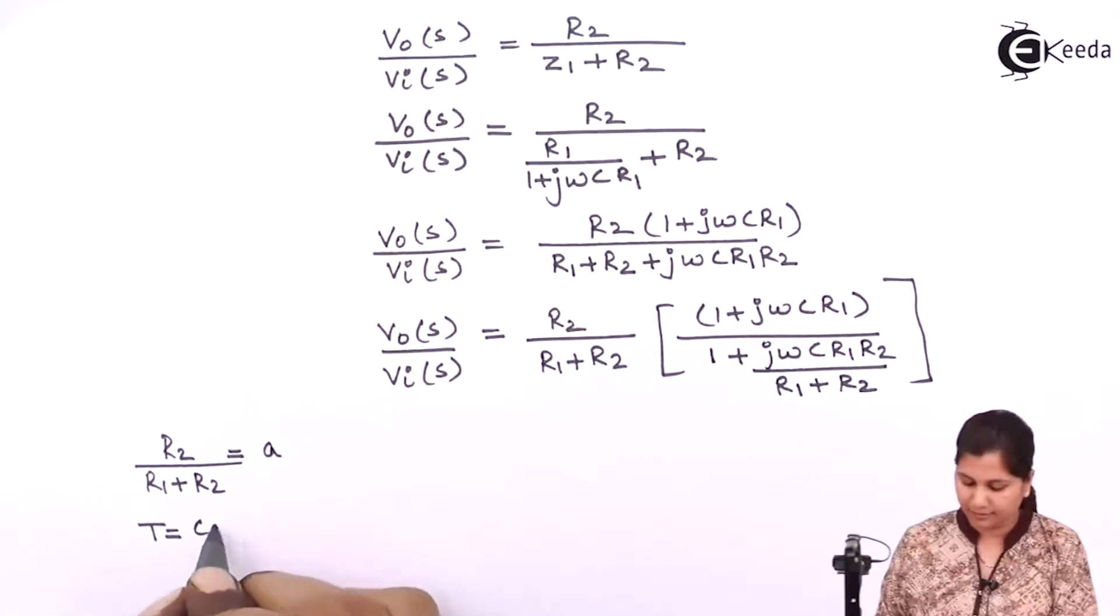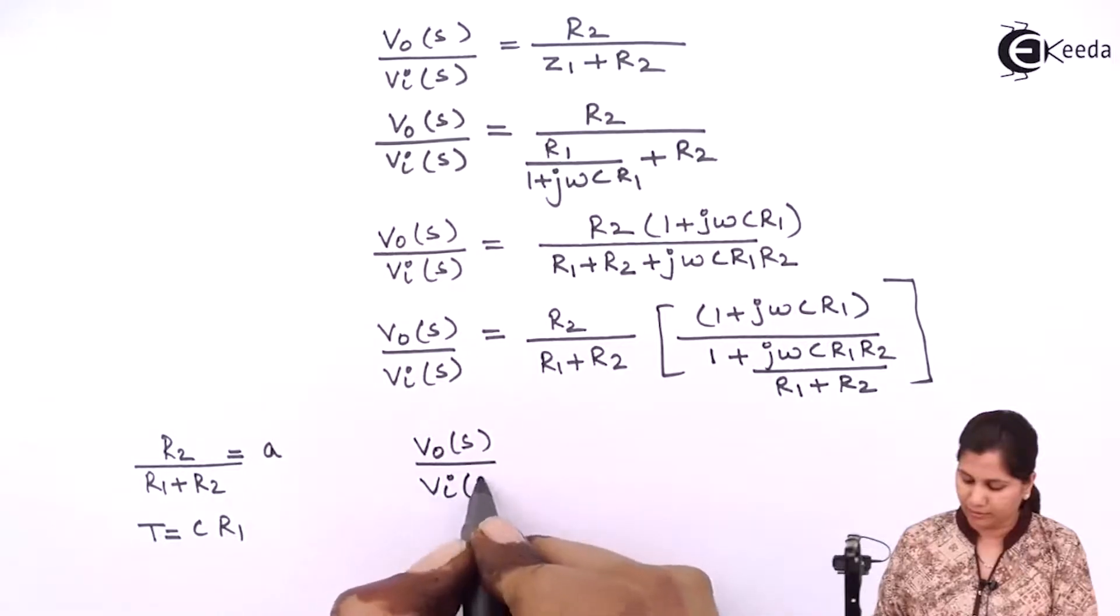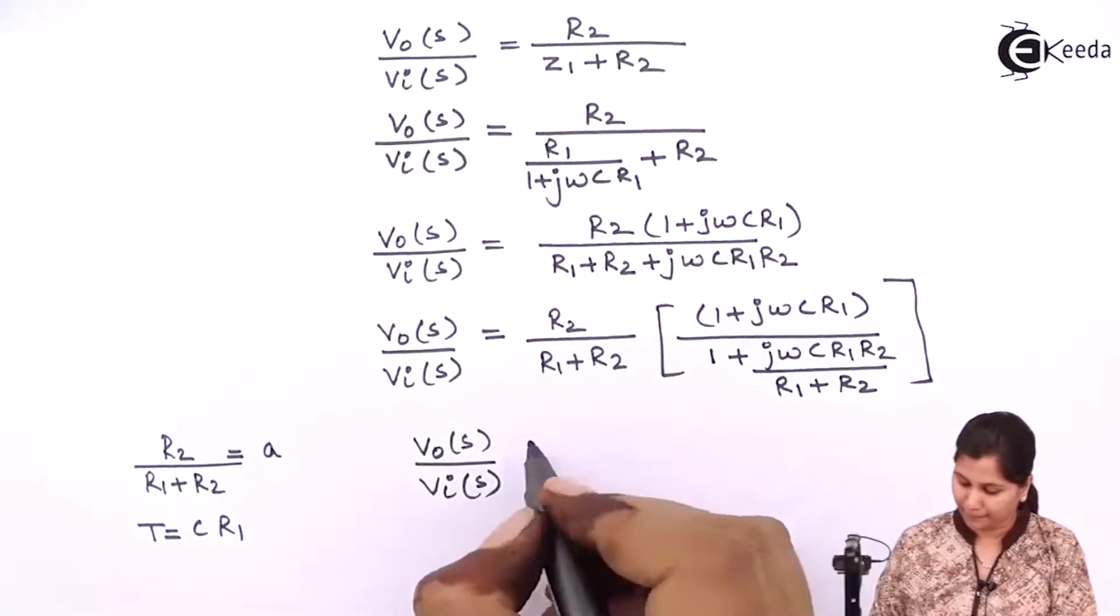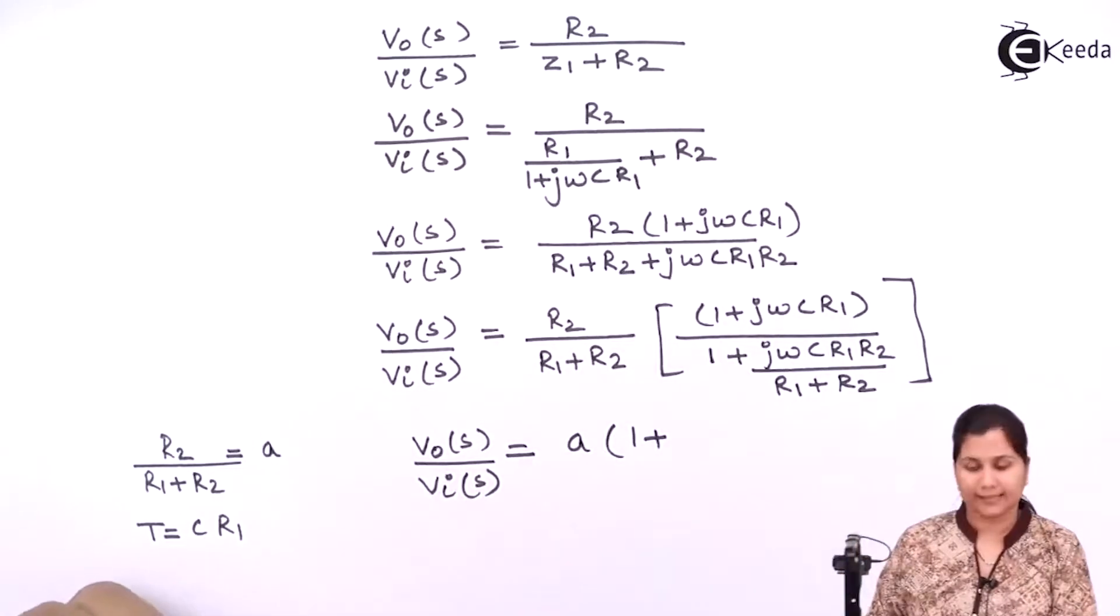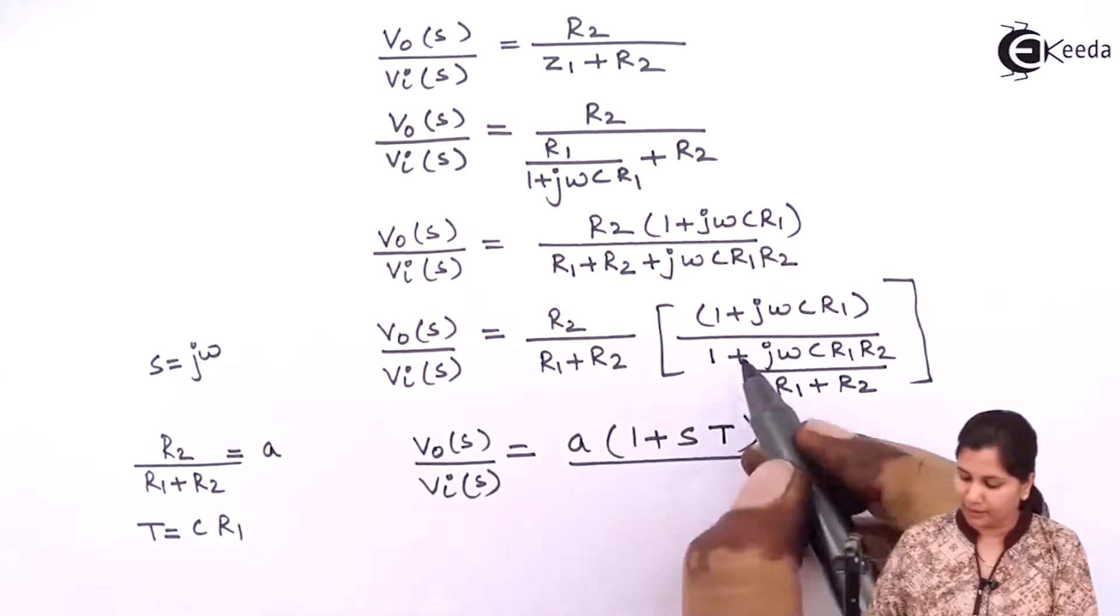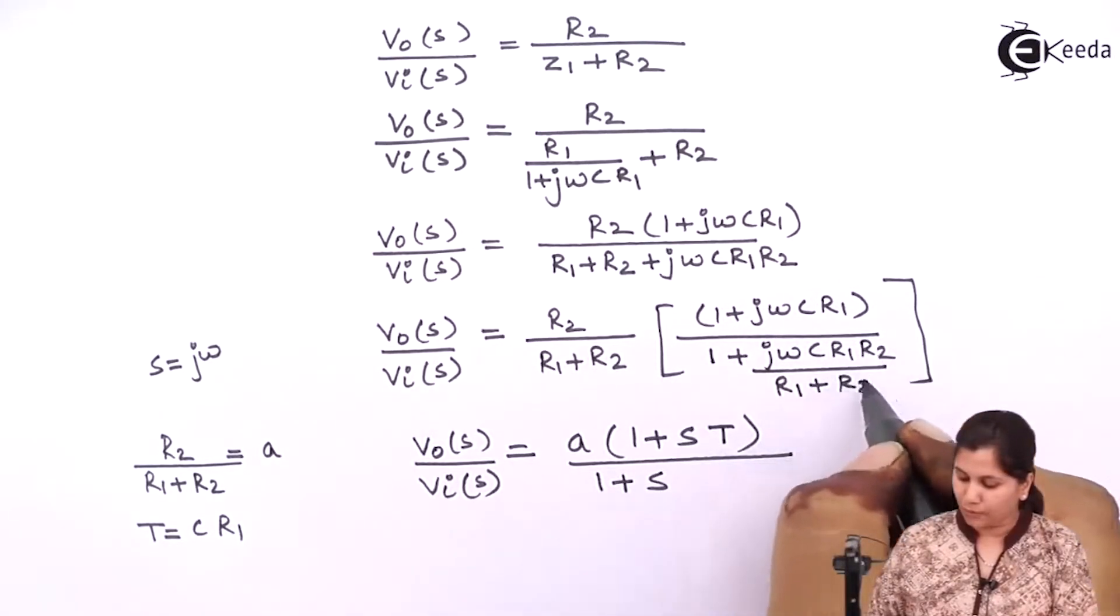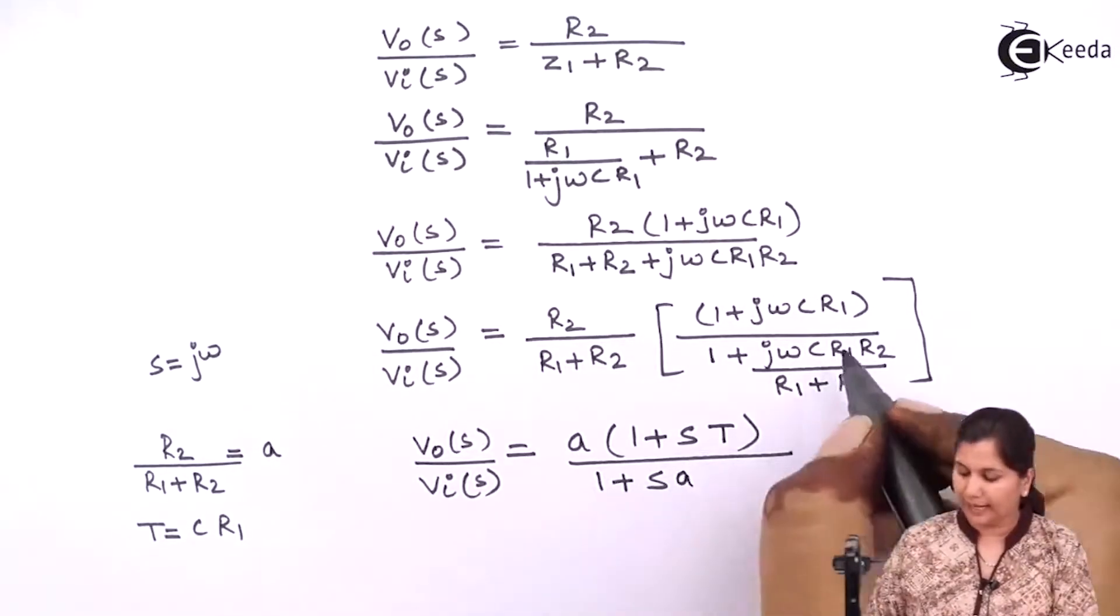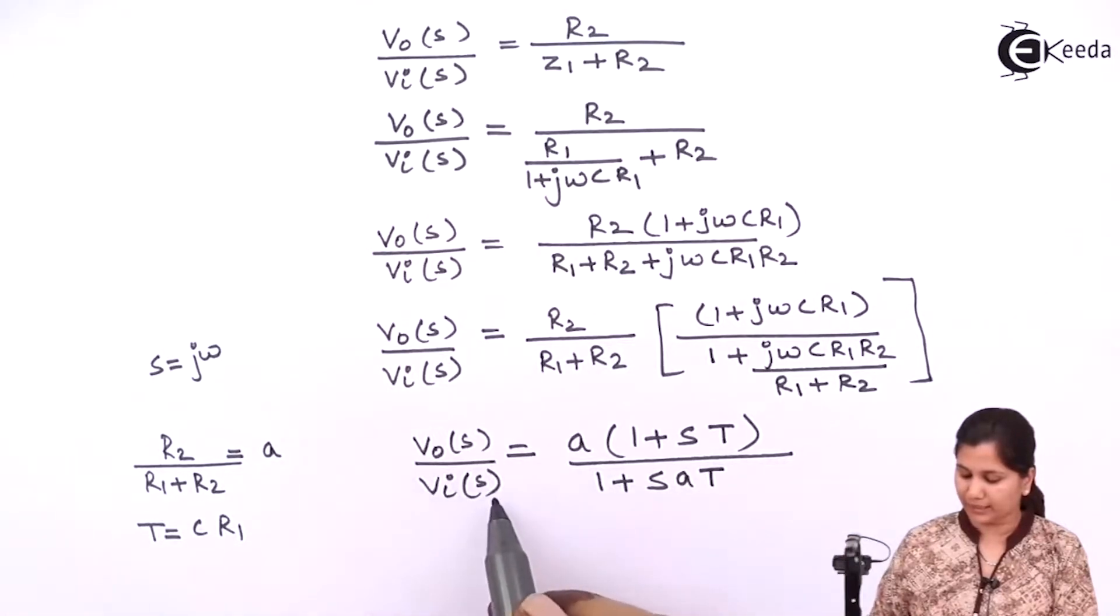1 plus jω can be written as s because s equals jω, so sCR1 is τ, the time constant. R2 upon R1 plus R2 is a, and CR1 is τ. So the transfer function will be V0(s) by Vi(s) equals to a(1 plus sτ) upon 1 plus saτ. So this is the transfer function of the system.